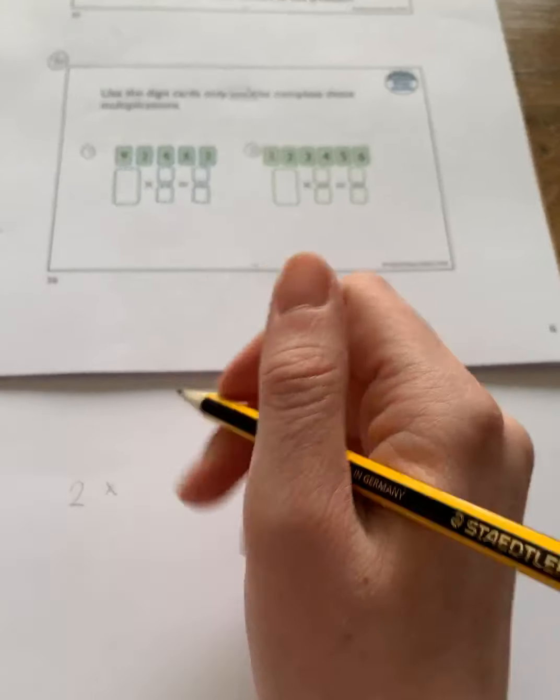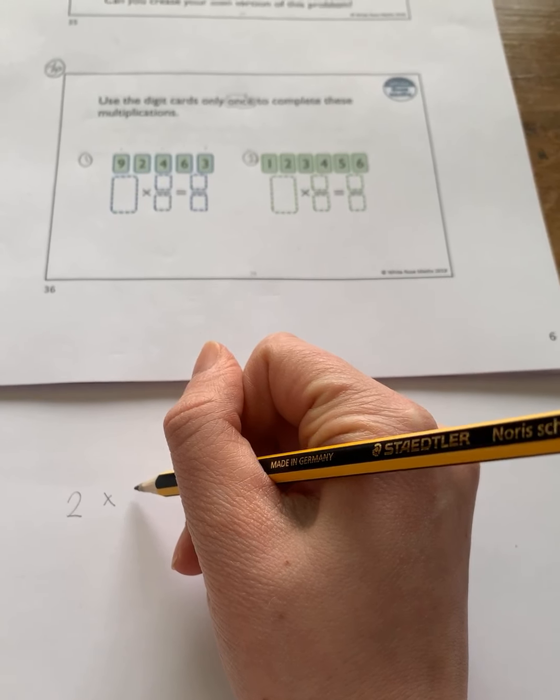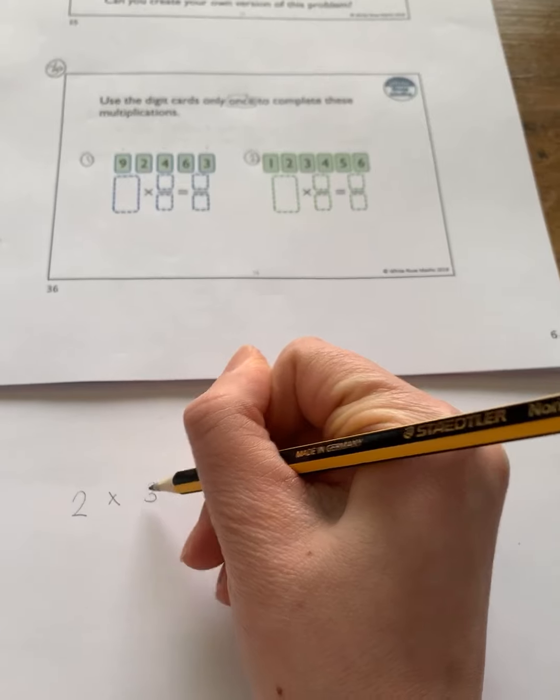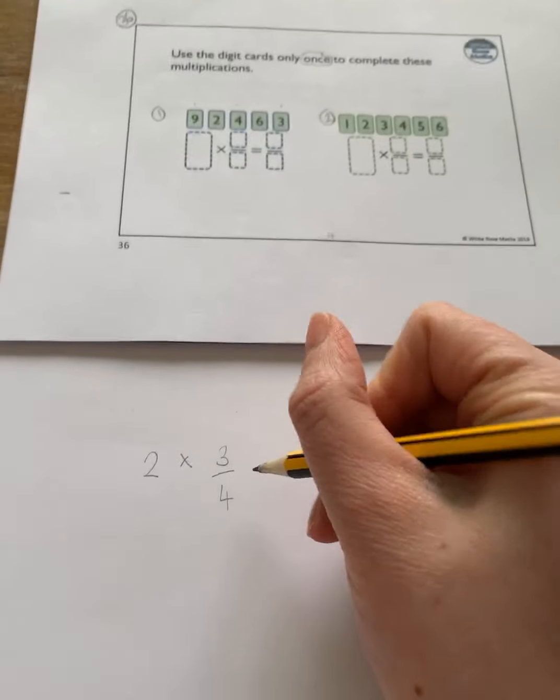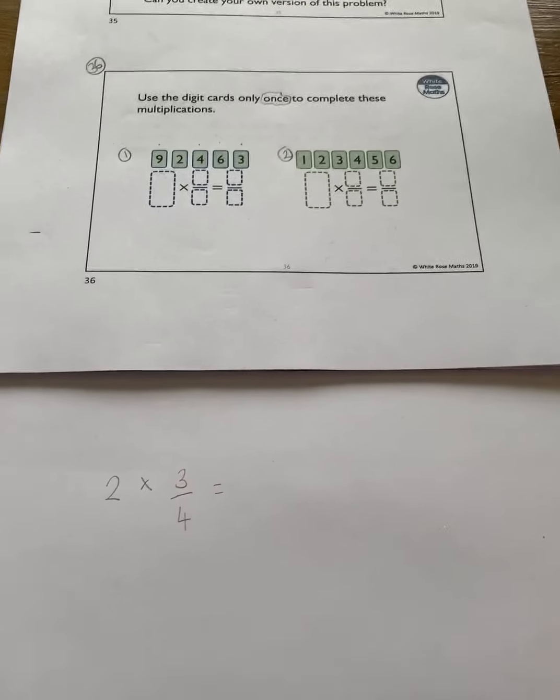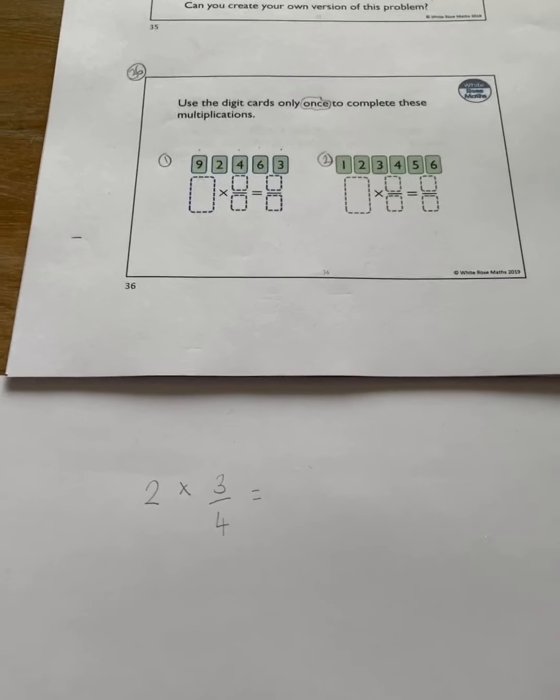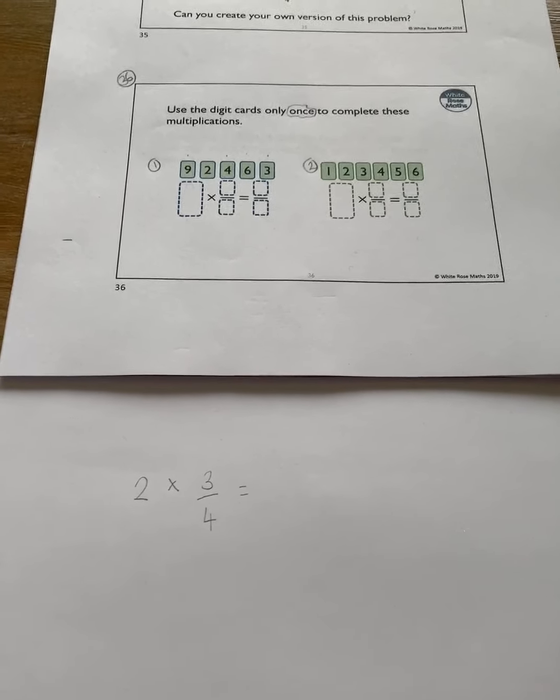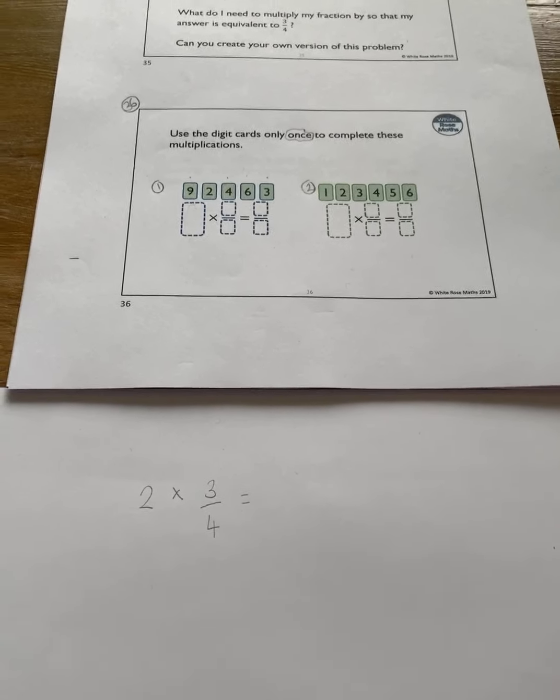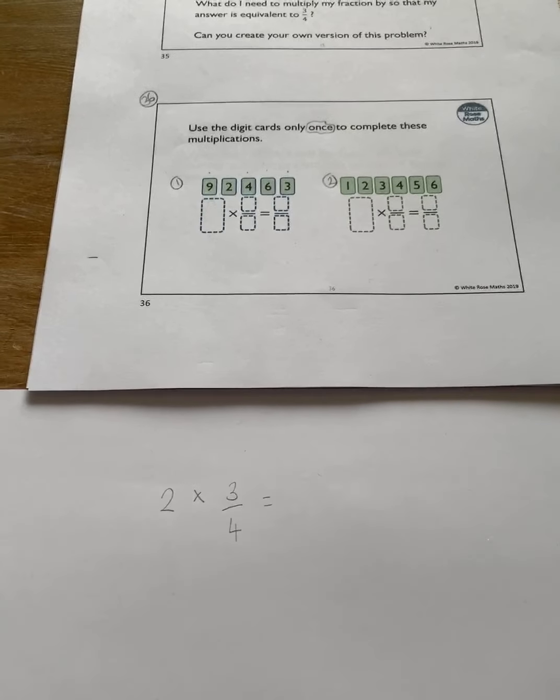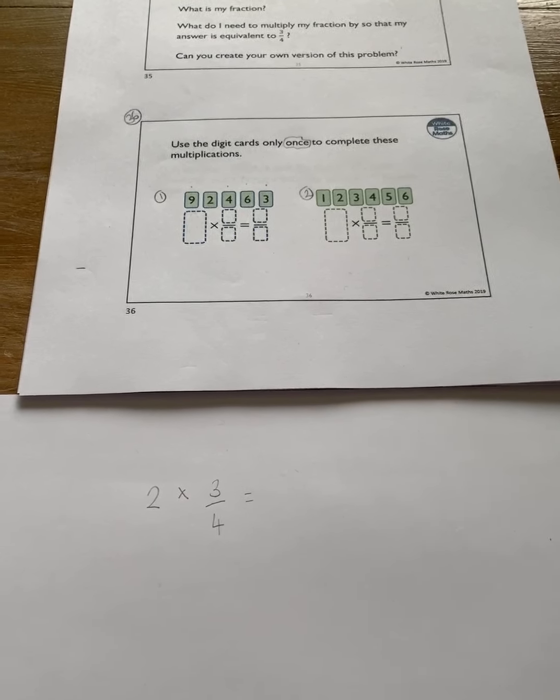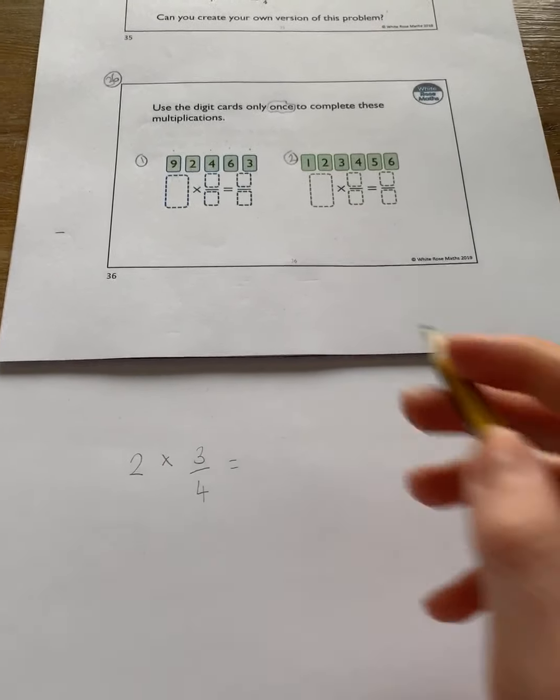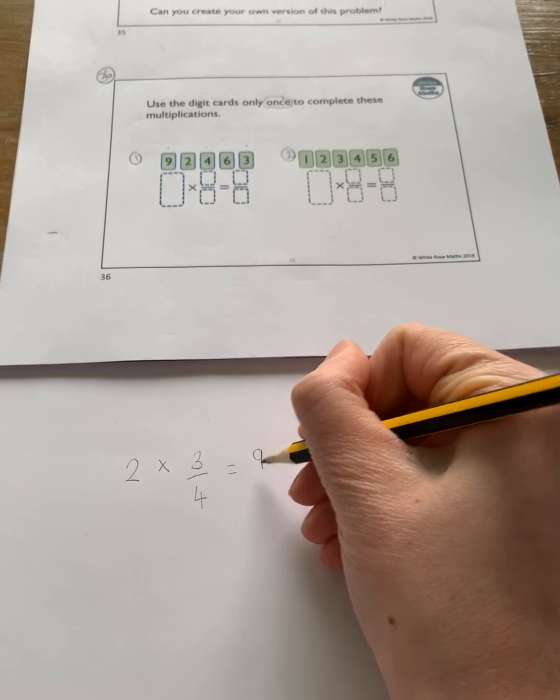So if I were to take the three and the four, I'd have three quarters and I'd write my equals and I just want you to think what digits do we have left? So you can do this at the same time as me and how am I going to write it as an improper fraction? I have six and nine but the six isn't going to be my numerator otherwise it wouldn't be an improper fraction. So it would look a bit like this.